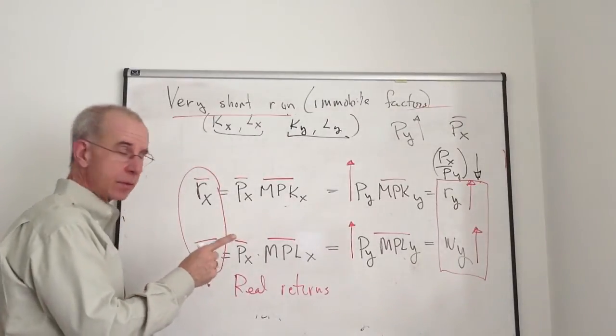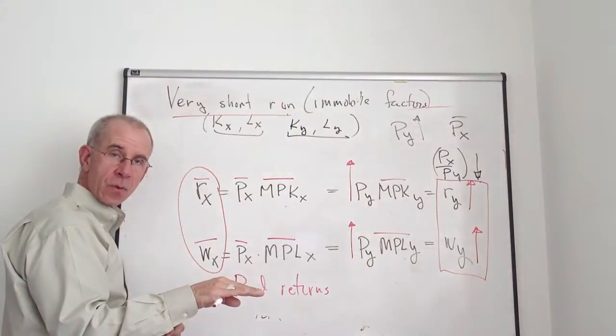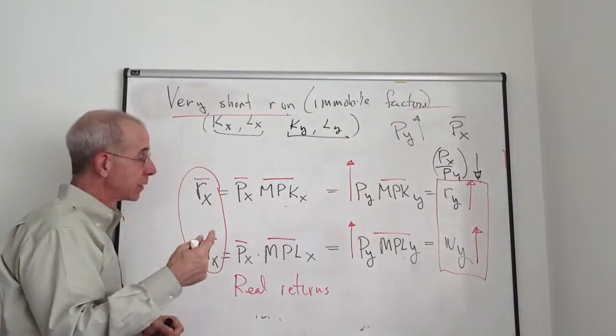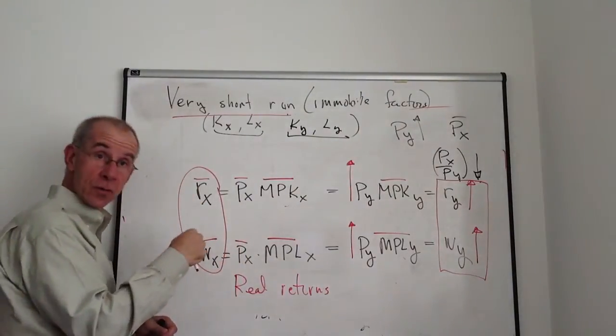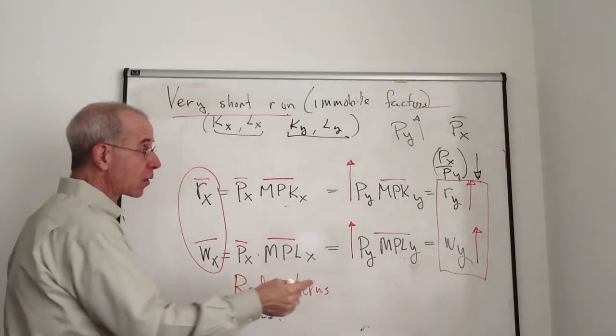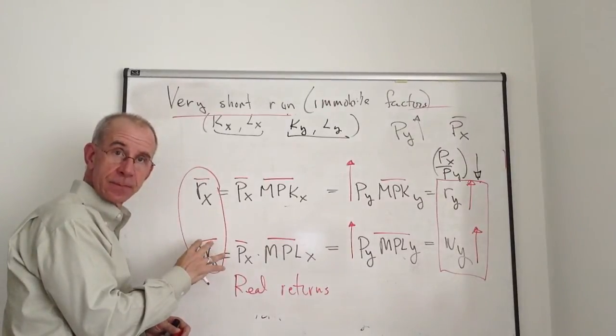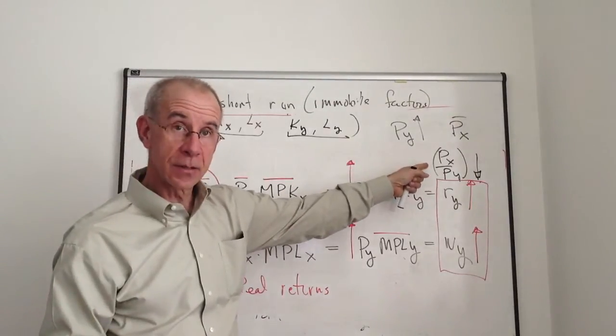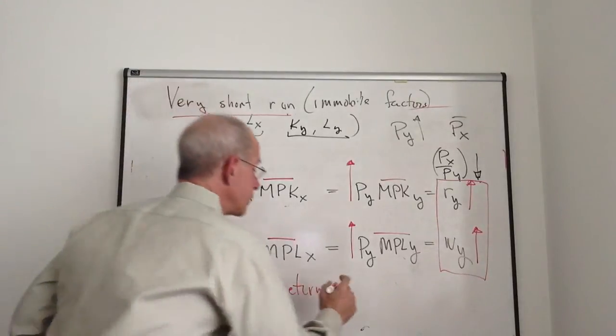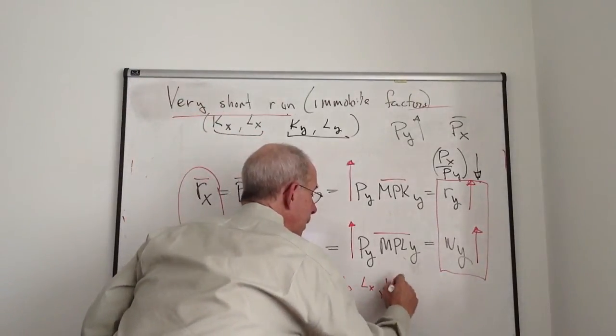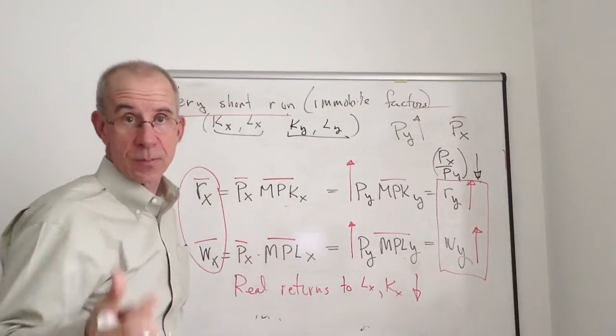Let's start with the easy one. Capital owners, workers in industry X, have the same income as they did before in dollar terms and nominal terms. They can buy the same amount of X. But this payment goes less far in purchasing power because the price of Y has gone up. So workers and capital owners in the X sector, in the sector where the relative price has gone down, those workers and capital owners get hurt. The real returns to labor and capital in X goes down as the relative price of X falls or the relative price of Y goes up.